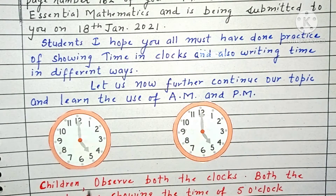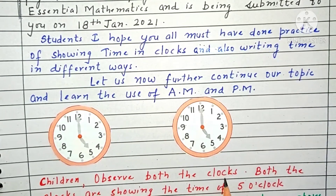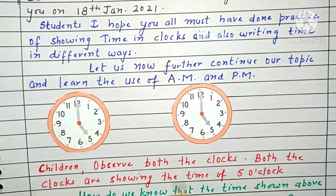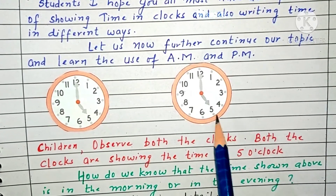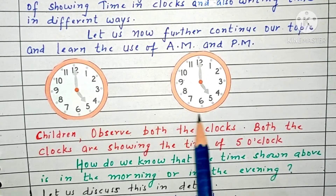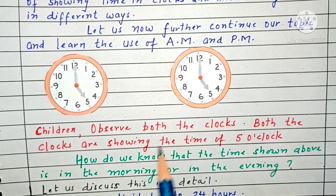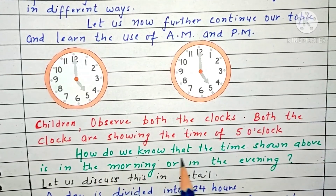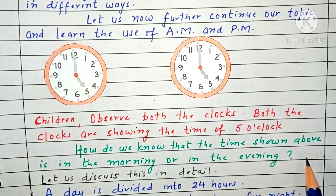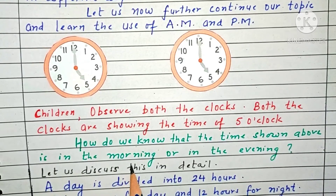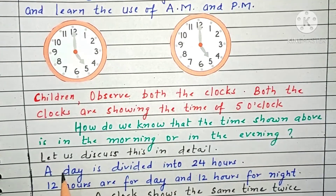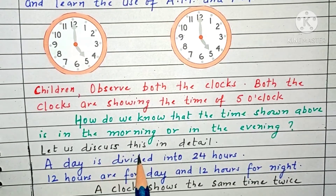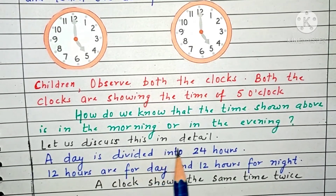Children, observe both the clocks. Both the clocks are showing the time of 5 o'clock. How do we know that the time shown is in the morning or in the evening? Let us discuss this in detail.